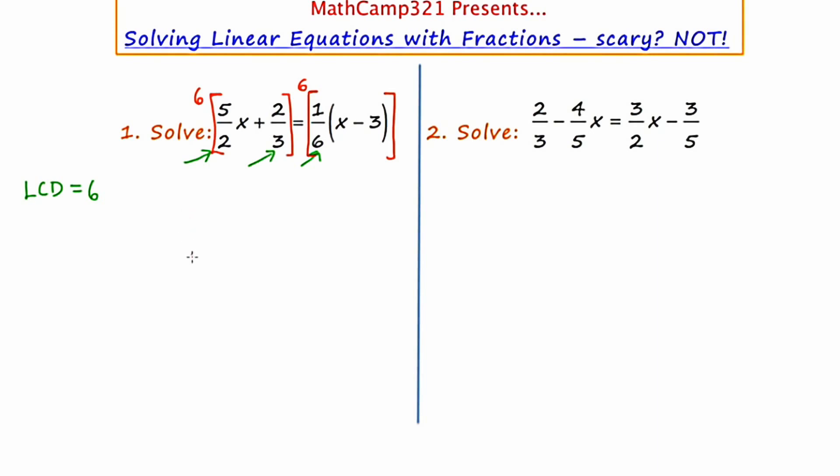Okay, on the left-hand side, we'll distribute the six into the five halves x, and then the six into the two thirds. Well, six times five halves x is 30 halves or 15x. Six times two thirds is 12 thirds or four.